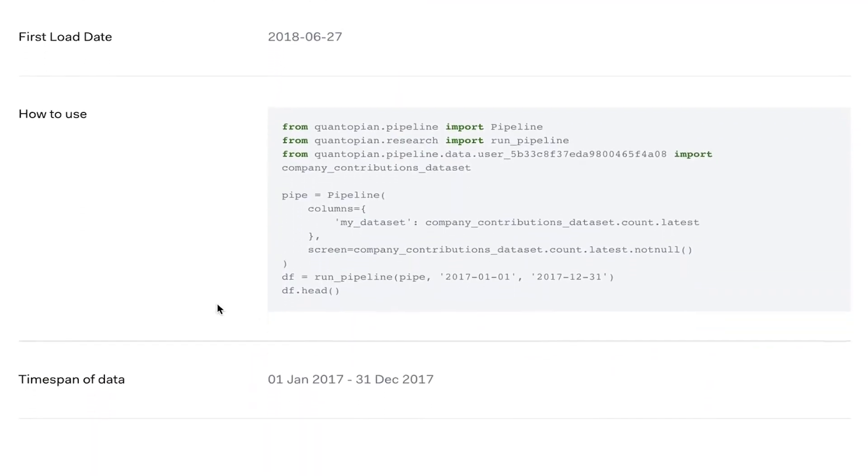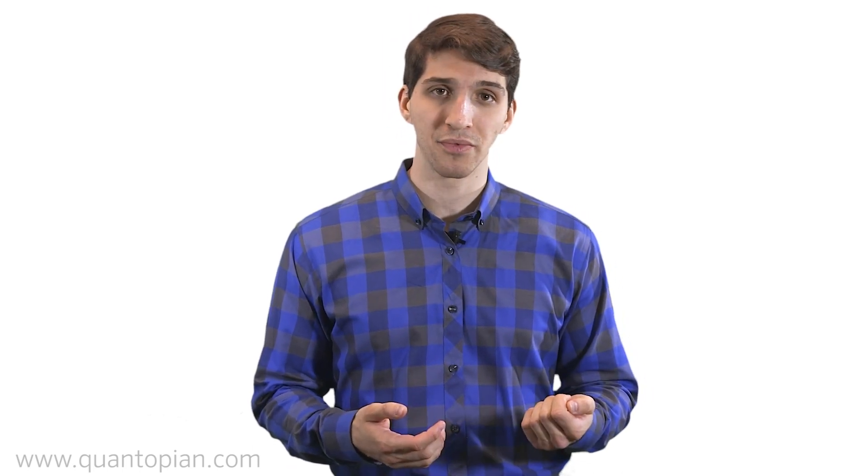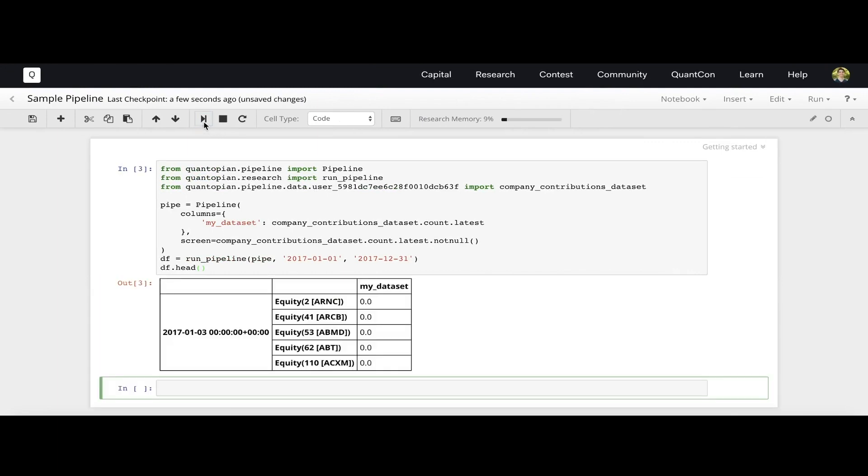Conveniently, the data page from that list gives us a sample pipeline that we can easily copy and paste into a research notebook. This sample pipeline constructs a pipeline factor from the first value column of our data. In this case, the count value column is selected and used in this pipeline. Running this pipeline reveals our dataset to be correctly mapped and ready to be used in my ongoing research and algorithm development.